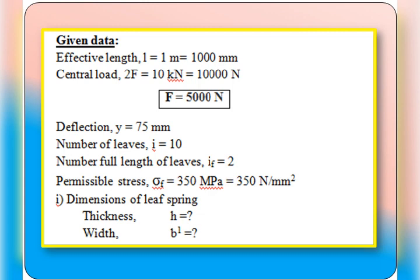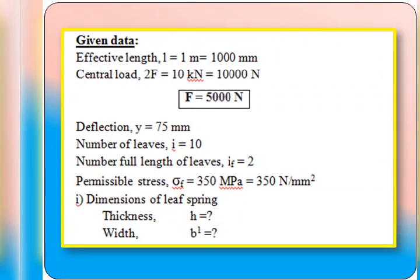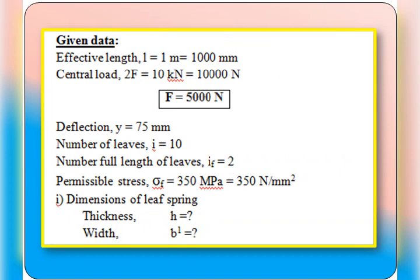Total number of leaves i is equal to 10. Number of full-length leaves, i suffix f, is equal to 2. The spring has been pre-stressed — this is very important — so that all leaves have the same stress of 350 mega Pascal. So sigma f, the permissible stress in the full-length leaves, is equal to 350 mega Pascal, that is 350 Newton per mm square.